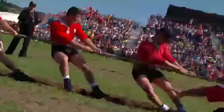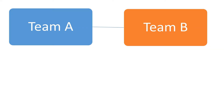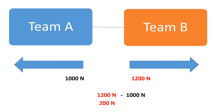Let's assume we have team A and team B. Team A uses a 1000 Newton force and team B pulls the rope with 1200 Newtons. Since team B is using a greater force, this greater force will first cancel out the 1000 Newton force of the opposing team. The excess force, which is 200 Newtons, is what enables team B to pull the rope to their side.